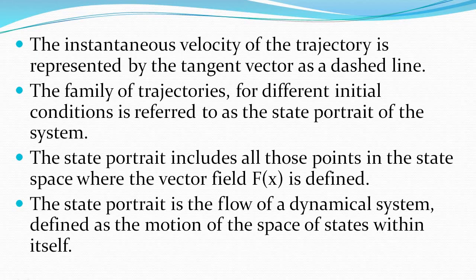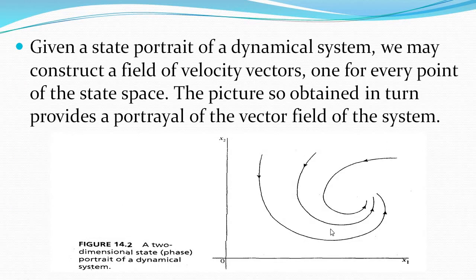The family of trajectories for different initial conditions is referred to as the state portrait of the system. The state portrait includes all points in the state space where the vector field is defined. Given a state portrait of a dynamical system, we can construct a field of velocity vectors — one for every point in the state space. The picture obtained provides the portrayal of the vector field, also called the phase portrait of the dynamical system.